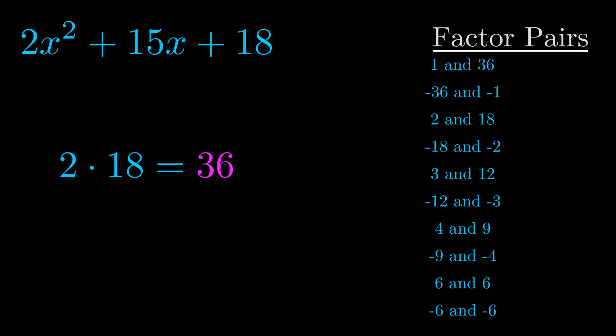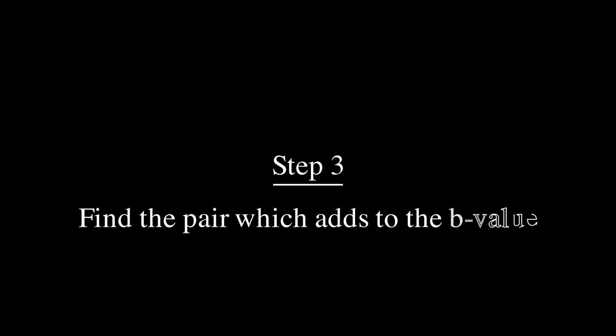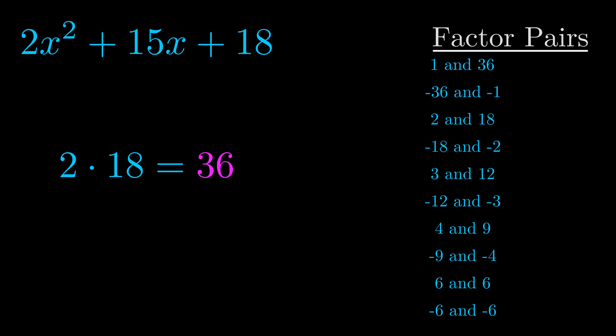Now once you have these factor pairs, the goal is to find which of these pairs adds to the b value. The b value is the coefficient on the x term. That's the middle term, the one that we haven't done anything with yet. And really this is the only factor pair that we need.